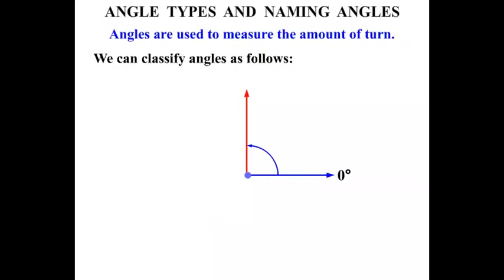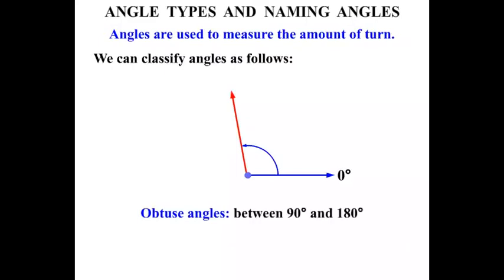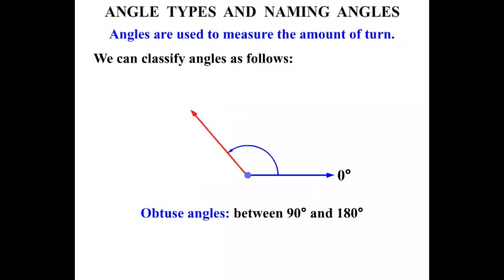Now once we get past 90 degrees, then we've got Obtuse Angles. These are between 90 degrees and 180 degrees. All of these angles are Obtuse.